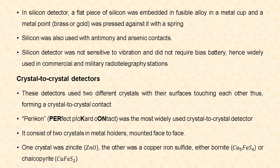Crystal-to-crystal detectors consist of two different crystals with their surfaces touching each other, forming a crystal-to-crystal contact. Pericon was the most widely used crystal-to-crystal detector. Pericon stands for 'perfect Picard contact,' as Picard was the inventor. In these detectors the two crystals are mounted in metal holders face to face.